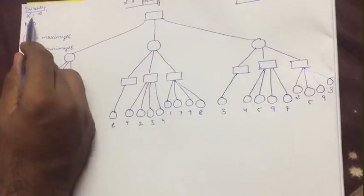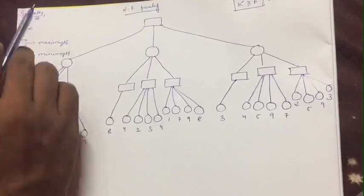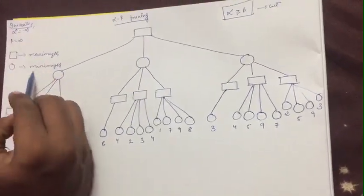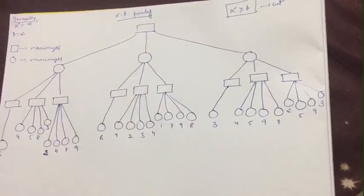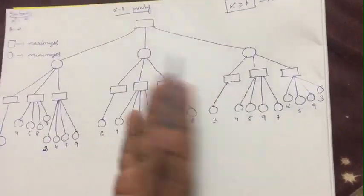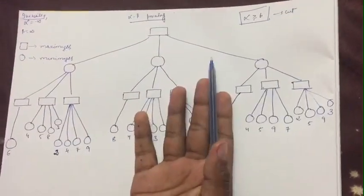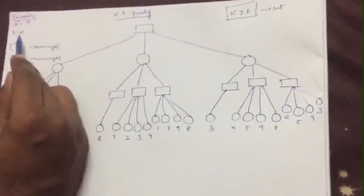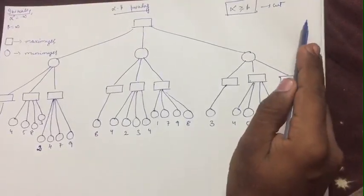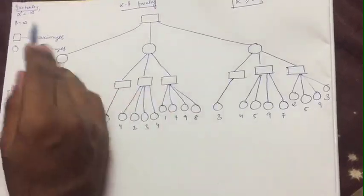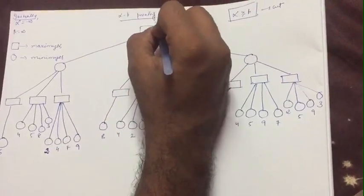Why have we taken alpha as minus infinity? Alpha stands for the maximizer node, so we take the worst case for both nodes. For the maximizer, starting from minus infinity means upgrading toward positive infinity is straightforward. Similarly, for beta, minimizing from positive infinity covers all contingencies. This is why alpha is initialized to minus infinity and beta to positive infinity before we start traversing.